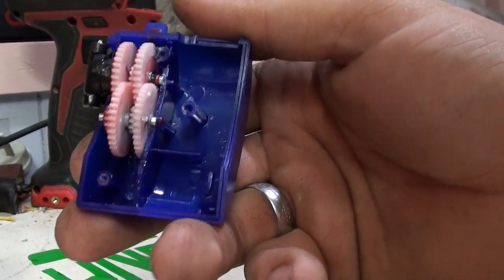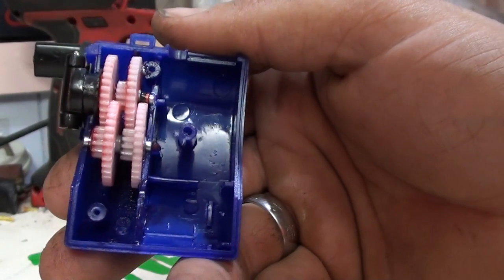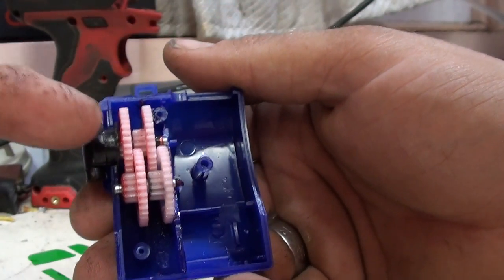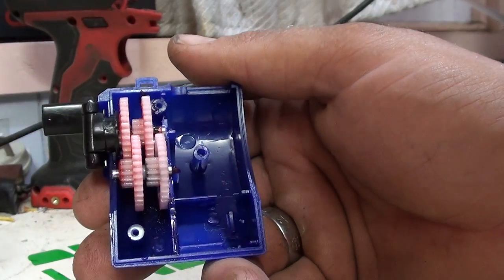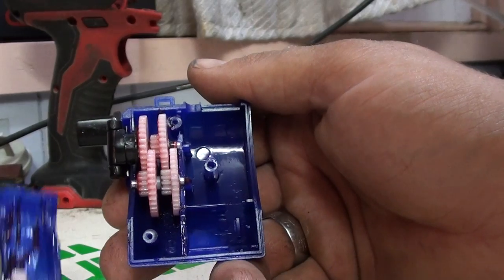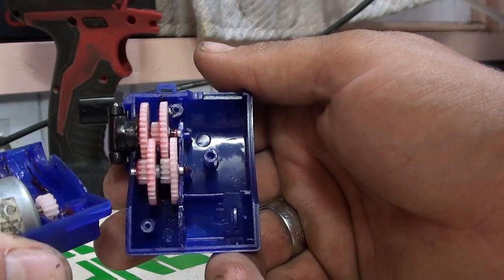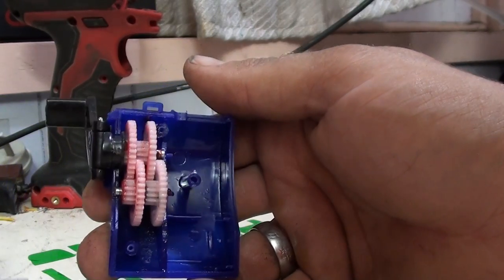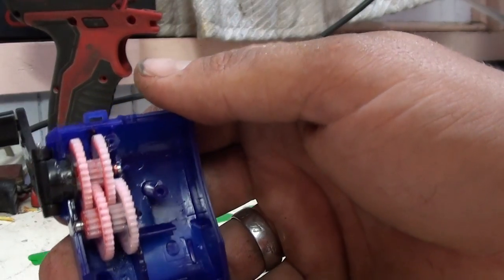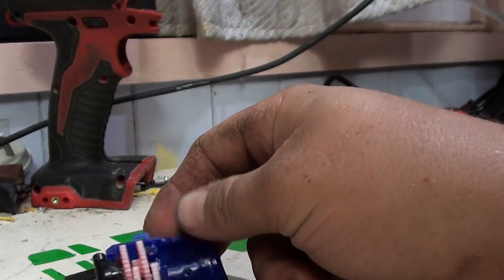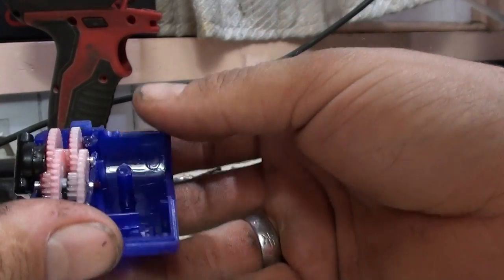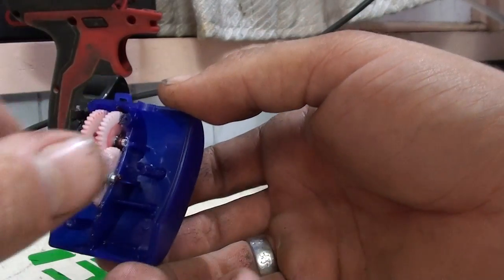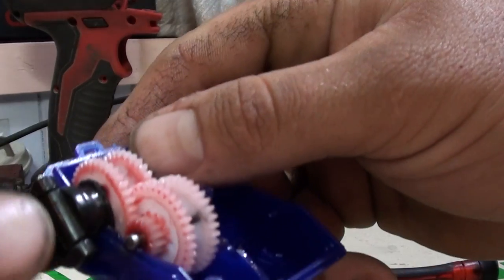Oh wow, look at the gearing up. So we've got a primary drive, one step up, two step up, three step up, and the fourth. There's four step-ups. So whatever speed I'm actually winding it at, it's four times that, more than four times that at the motor. There's four steps in the speed ramp up.